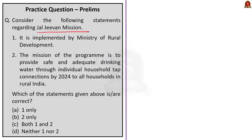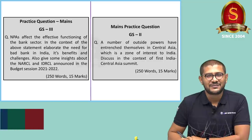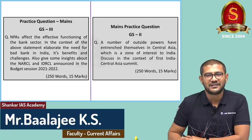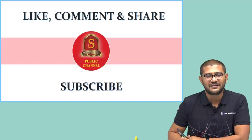The last prelims question is about the Jal Jeevan Mission — find the correct statement. Statement 1: it is implemented by the Ministry of Rural Development — this is incorrect; the program is implemented by the Ministry of Jal Shakti. Statement 2: the mission aims to provide safe and adequate drinking water through individual household tap connections by 2024 to all households in rural India — this is correct, as it is the vision statement of the program. Since Statement 1 is incorrect and Statement 2 is correct, the answer is option B: 2 only. The mains question based on today's discussion is also given — write the answer and post it in the comment section. If you like today's discussion, like, comment, and share, and subscribe to Shankarai's Academy YouTube channel.